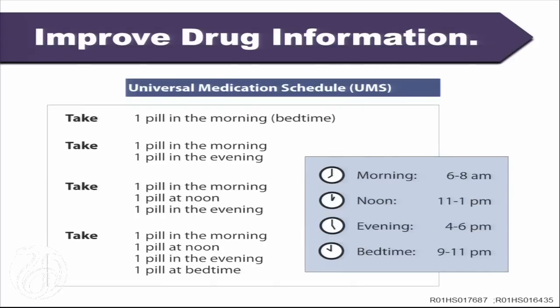This is what was shown to you earlier by Terry Davis — our universal medication schedule. We're very close to making this part of a standard, incorporating it in electronic health records, working with pharmacies to make this a best practice. The idea is, rather than variably saying 'take two tablets twice daily,' to provide more explicit information. That evidence base goes back to 1995. We have two R01s funded by AHRQ and the Office of Behavioral and Social Science Research at NIH.